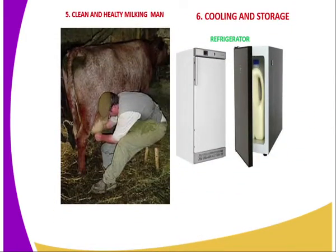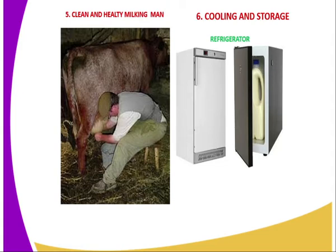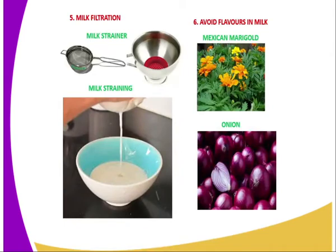Number five, clean and healthy milking man. The person who is supposed to carry out the milking exercise should be a clean person. The milking man is supposed to be neat so that the milk is clean and of high quality. Then we have number six, cooling and storage. After milking, you should have a cooling and storage facility. I have given you a demonstration of a refrigerator here, which is normally used for the cooling of milk. Milk is highly perishable, and therefore you are supposed to provide a cooling environment in order to inactivate bacteria so the milk will not spoil easily.